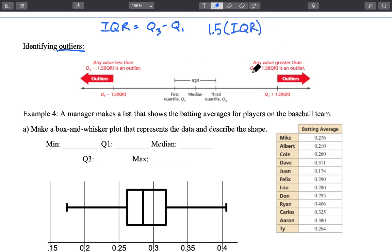Now to find the upper bound we are going to take Q3 plus this one and a half times our IQR. Okay and we are going to add that value.